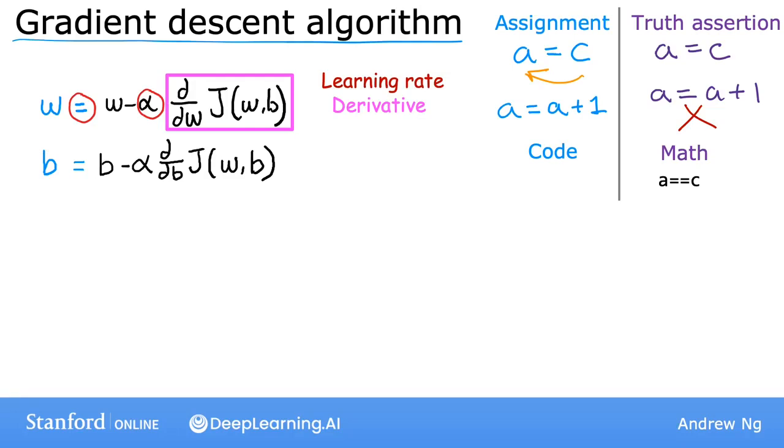Well, for the gradient descent algorithm, you're going to repeat these two update steps until the algorithm converges. And by converges, I mean that you reach the point at the local minimum where the parameters w and b no longer change much with each additional step that you take.